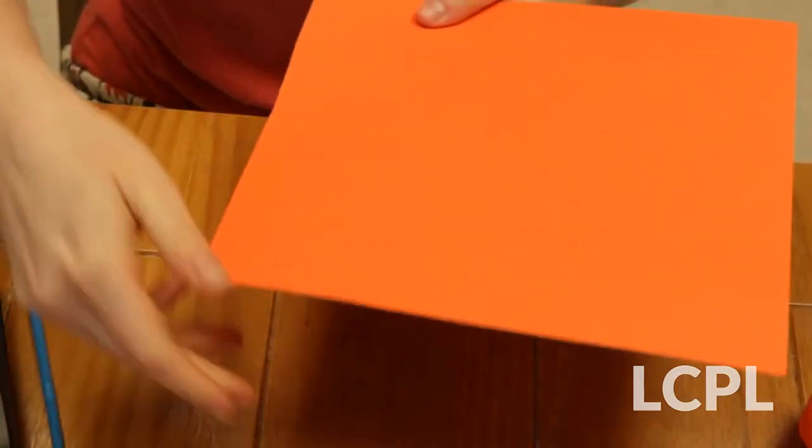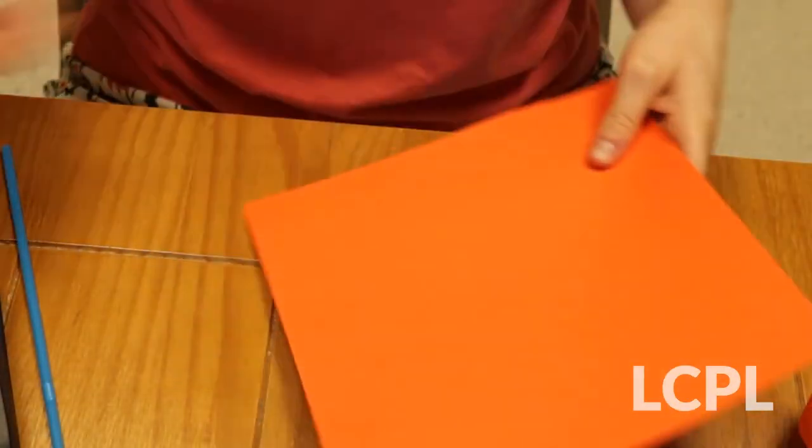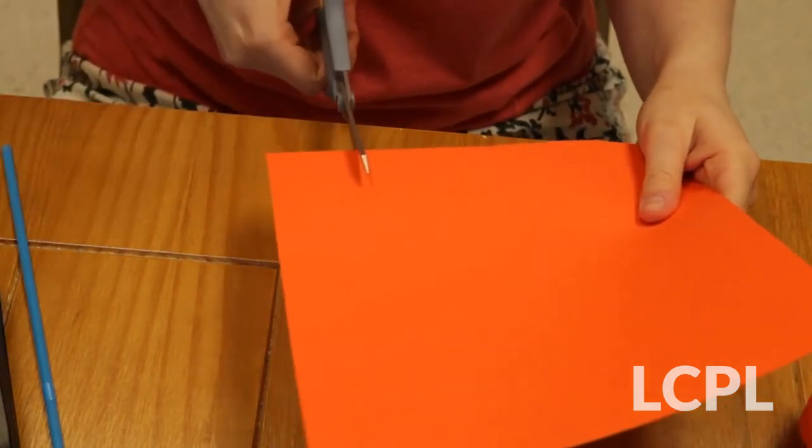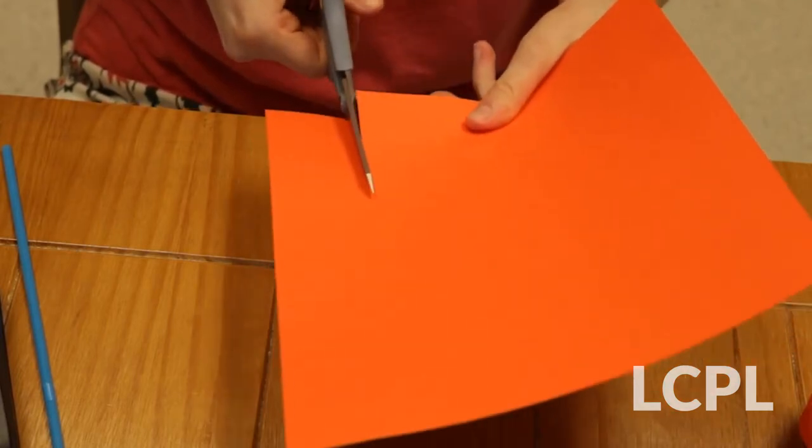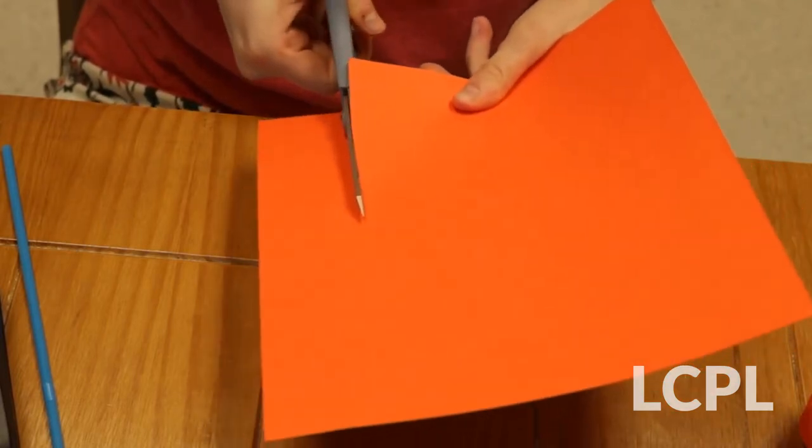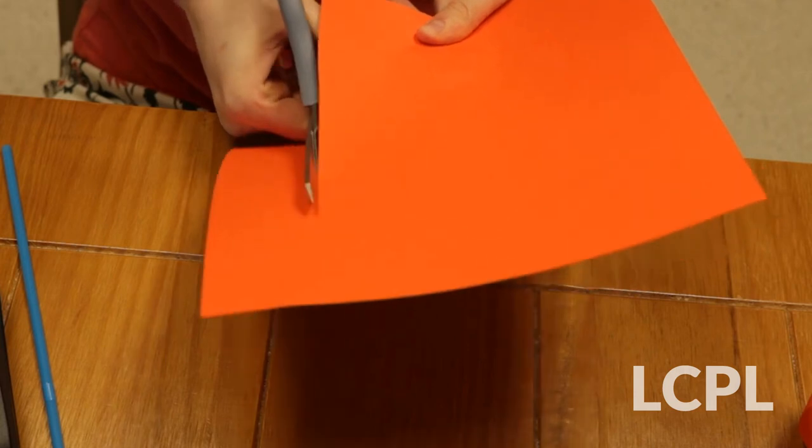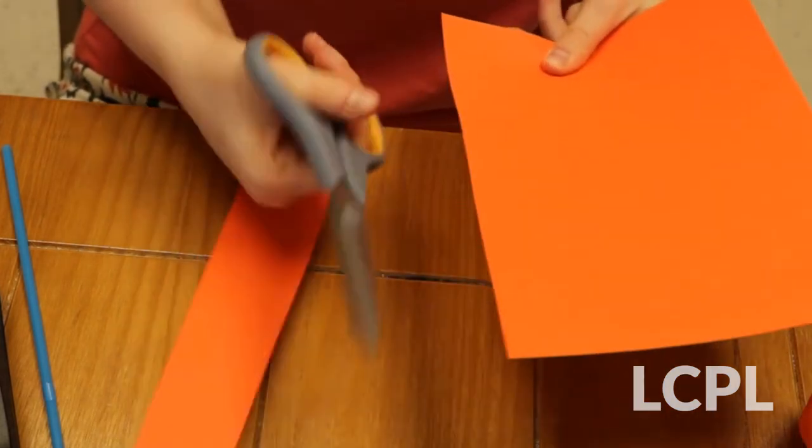Next, what you're going to want to do is take the longer side of the paper and cut another strip that is about two inches wide. And what you're going to do is you're going to have two strips of paper that are a little bit different in size but the same width. These are going to be what helps fly your airplane.